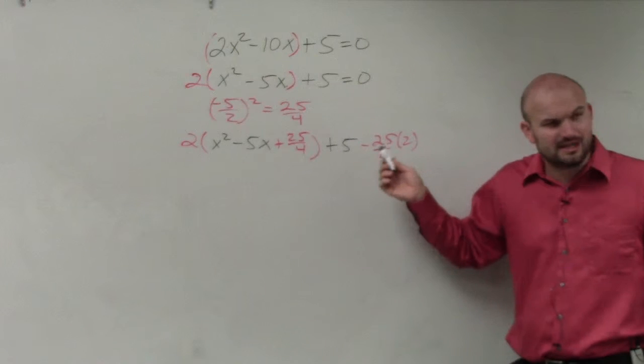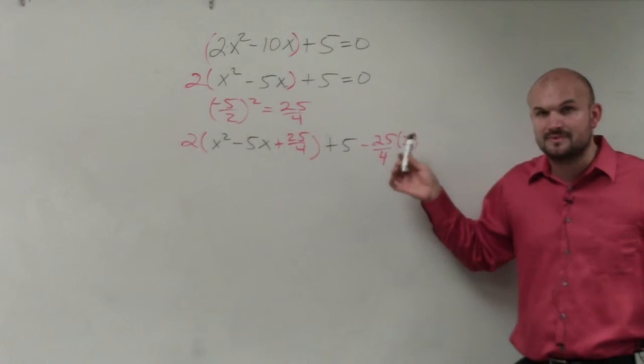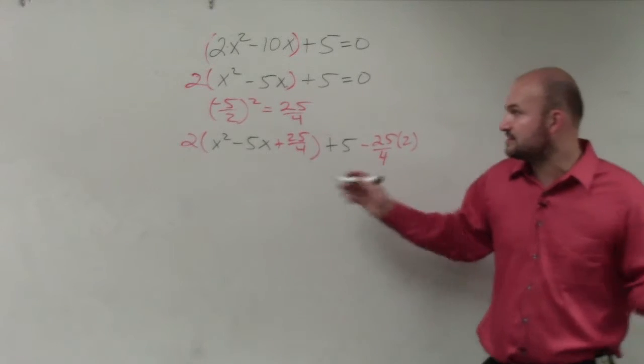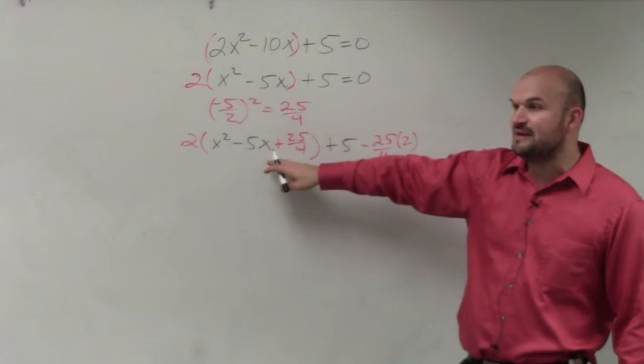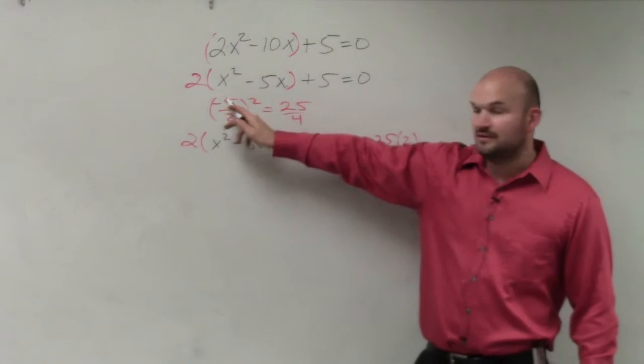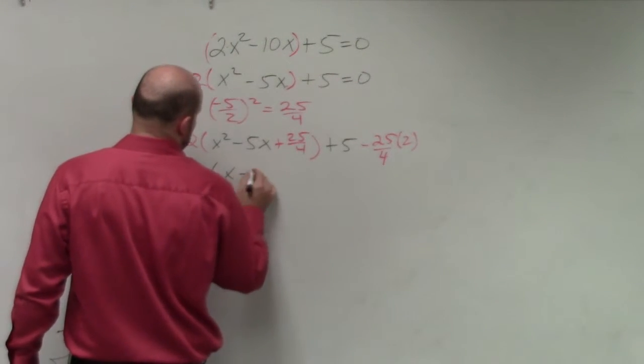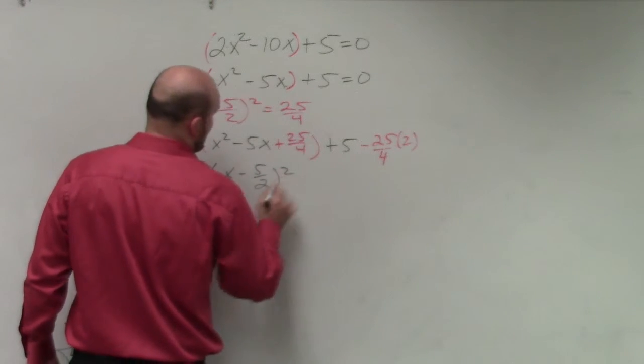Does everybody see that? I just didn't color code it this time like I did last time. Anybody have any questions on that? That's the hard part everybody forgets. Here, again, just do your b divided by 2. What was my b divided by 2? Negative 5 over 2. So I have 2 times x minus 5 halves squared.